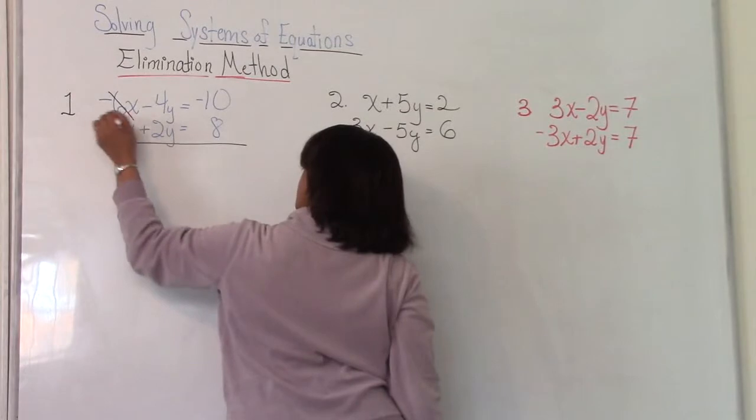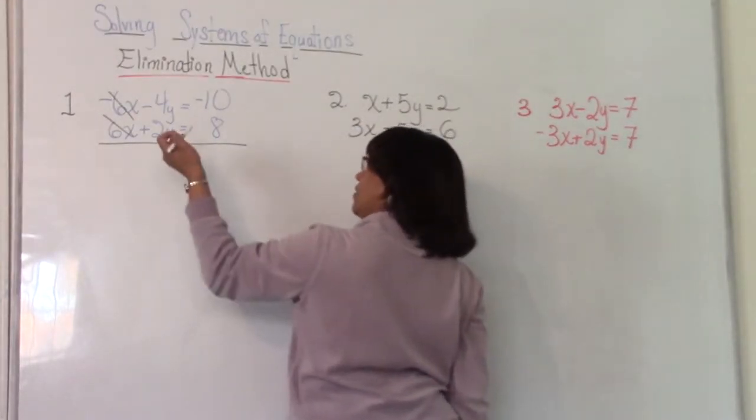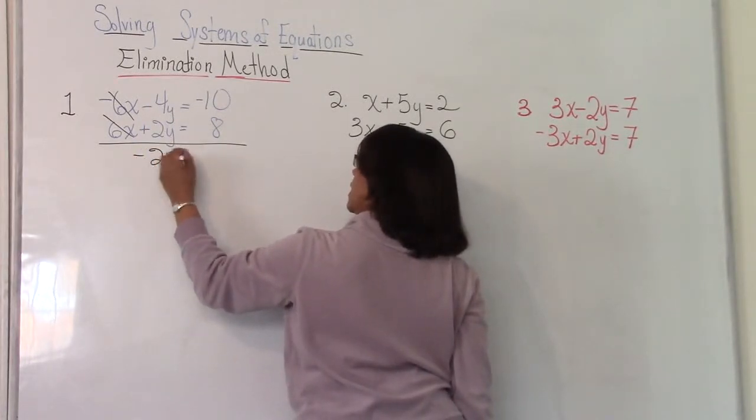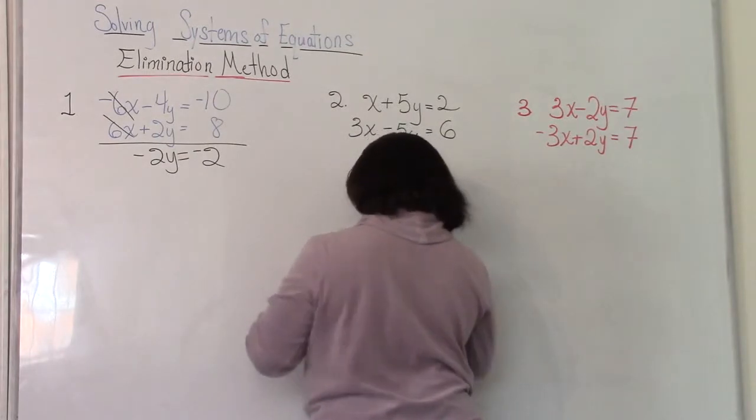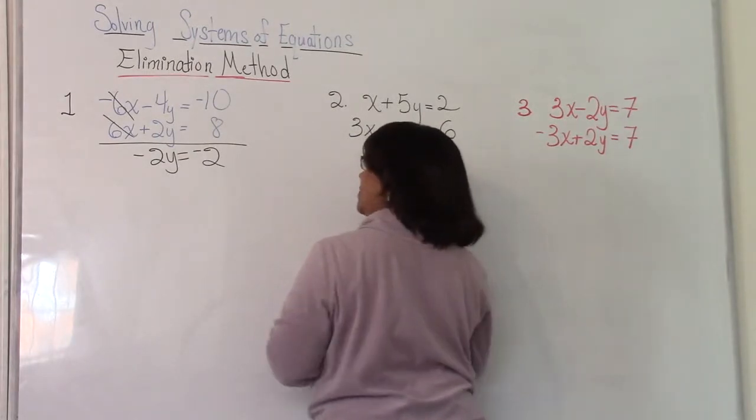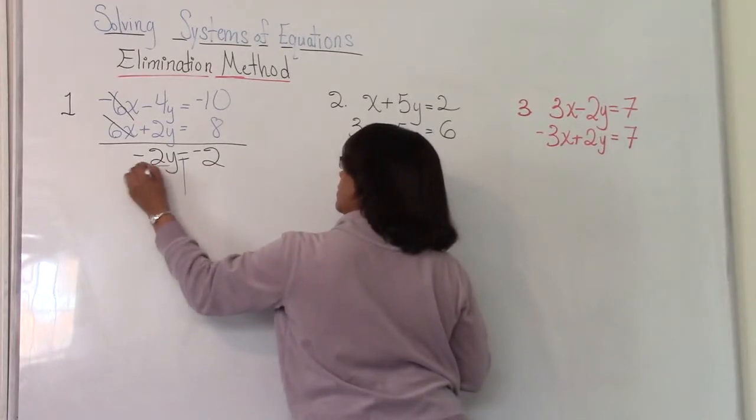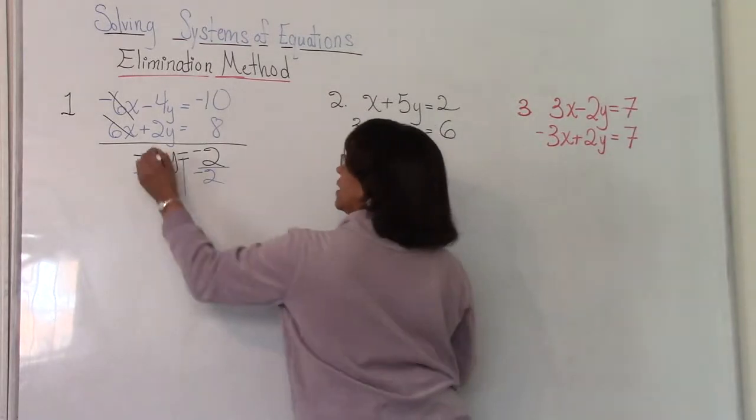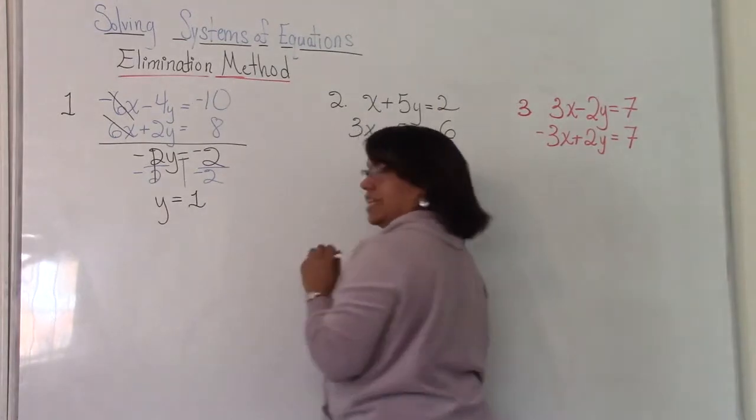So negative 6 plus 6 is zero. Just like when we were young, when we were adding, we just put a line. Negative 4 plus 2 is negative 2y. And negative 10 plus 8 is negative 2. But we're solving for y, so what do we need to do now? Yes, divide both sides by negative 2 because that's multiplication. So we have to do the inverse operation of division. And we get y is equal to 1.